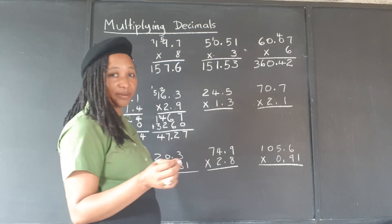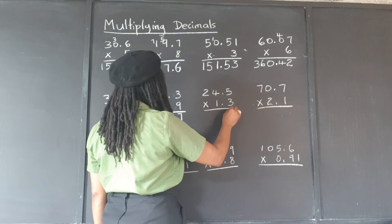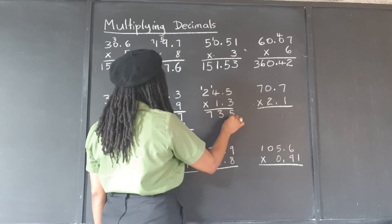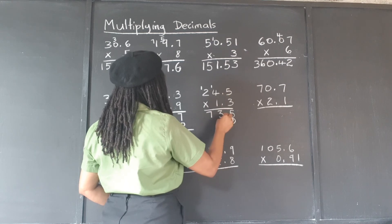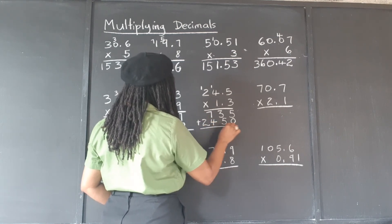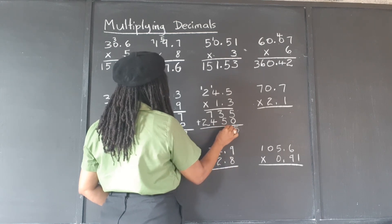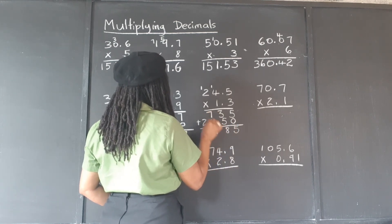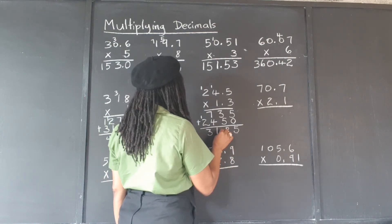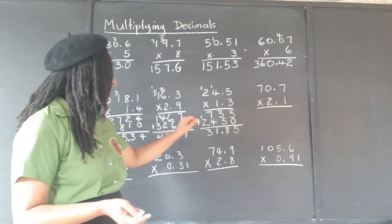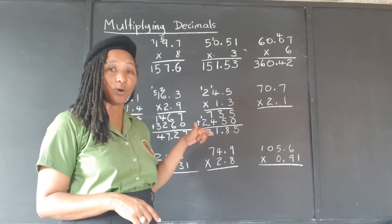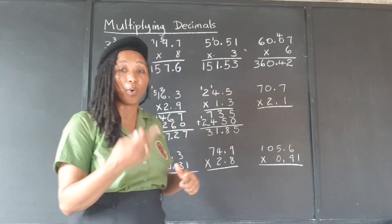24.5 times 1.3. 3 times 5 is 15. 3 times 4 is 12, plus 1 is 13. 3 times 2 is 6, plus 1 is 7. Put our placeholder. 1 times 5 is 5. 1 times 4 is 4. 1 times 2 is 2. Now we add: 5 plus 0 is 5, 3 plus 5 is 8, 7 plus 4 is 11, 2 plus 1 is 3 plus carry. We have 1 plus 1, so 2 decimal places. You don't need to put the decimal points anywhere in the working — only in the final answer. When you get your final answer, count how many decimal places you had in both the top and the bottom numbers, and put that total number of decimal places back in.